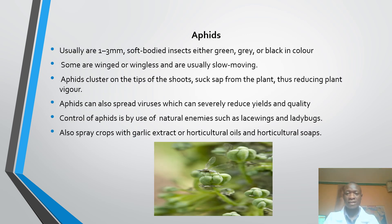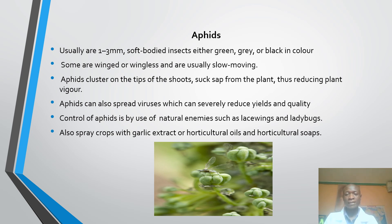Let's start by discussing aphids as our number one insect pest on vegetables. These are usually 1 to 3 millimeters in body size. They are soft-bodied insects and are either green, grey or black in colour.